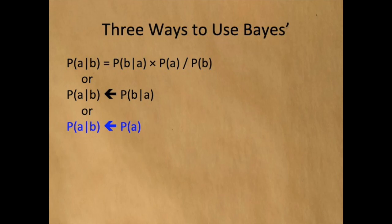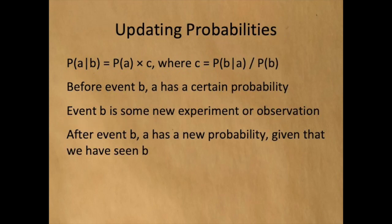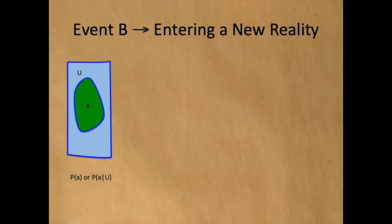The final way we're going to consider Bayes' law is as a function that converts the probability of A into the probability of A given B. To compute the probability of A given B, we're going to multiply the probability of A times some constant, where that constant equals the probability of B given A divided by the probability of B. Before event B, A has a certain probability. Event B is some new experiment or some new observation, and after this event, A has a new probability given that we have seen B.